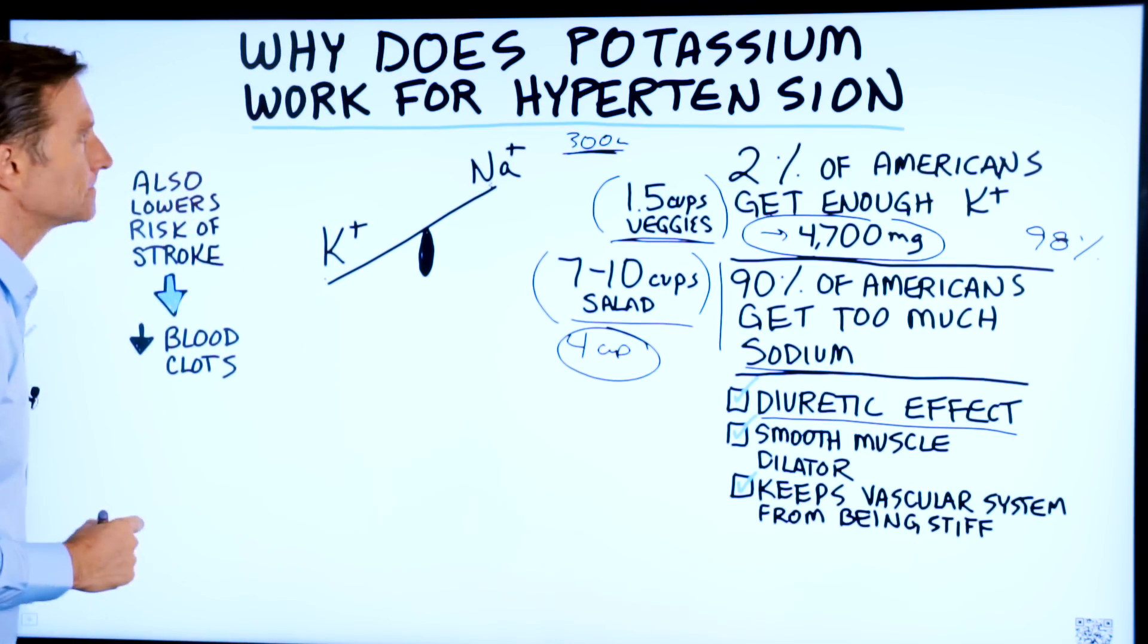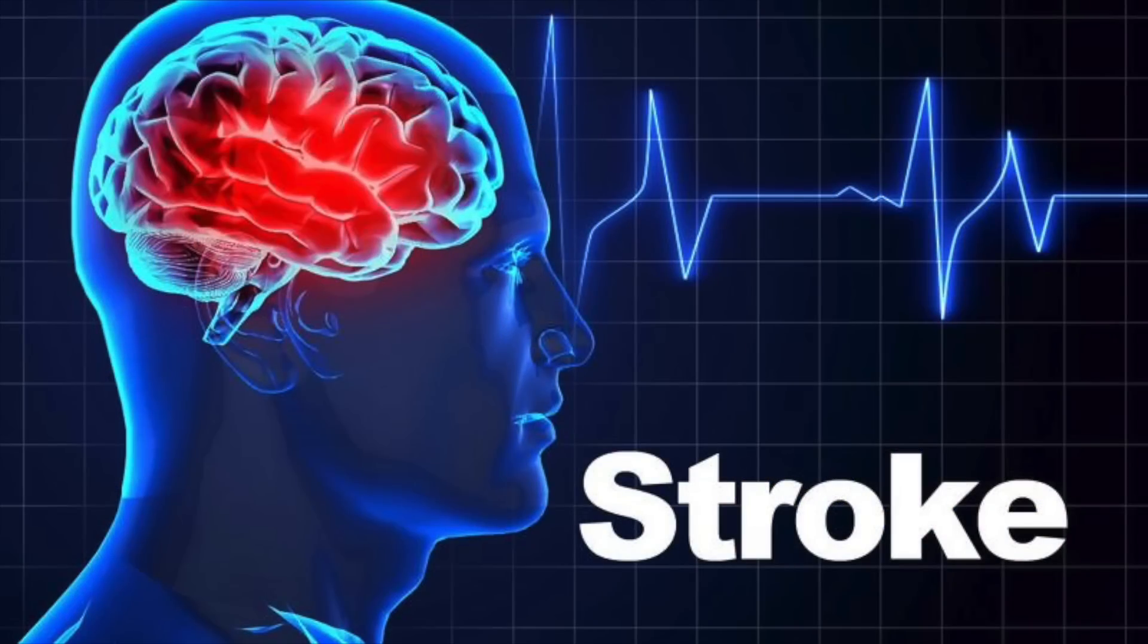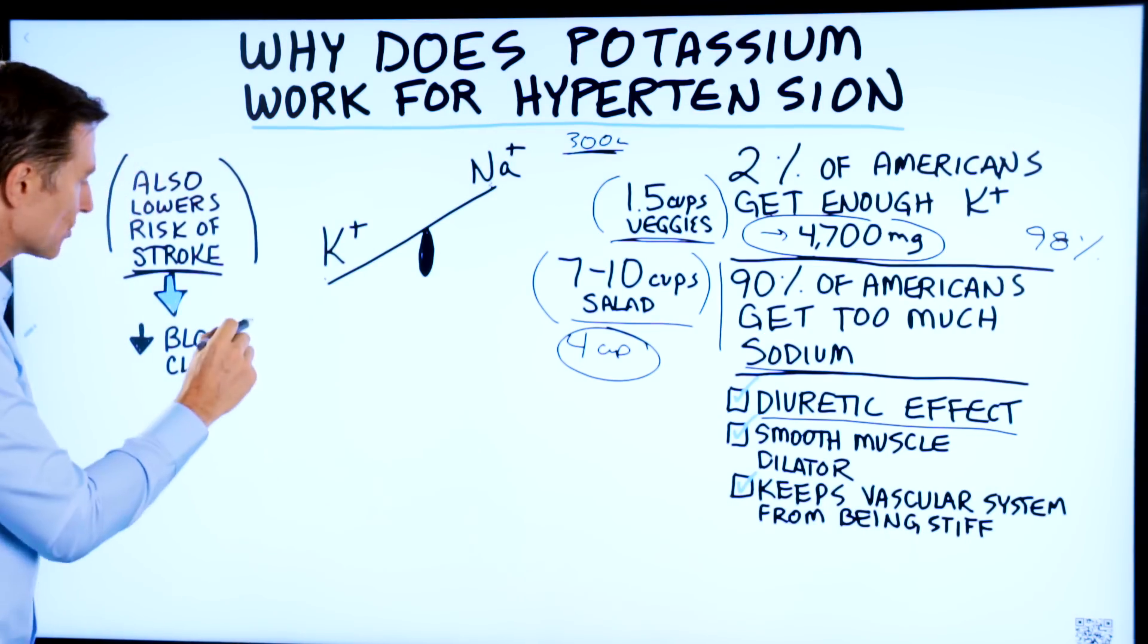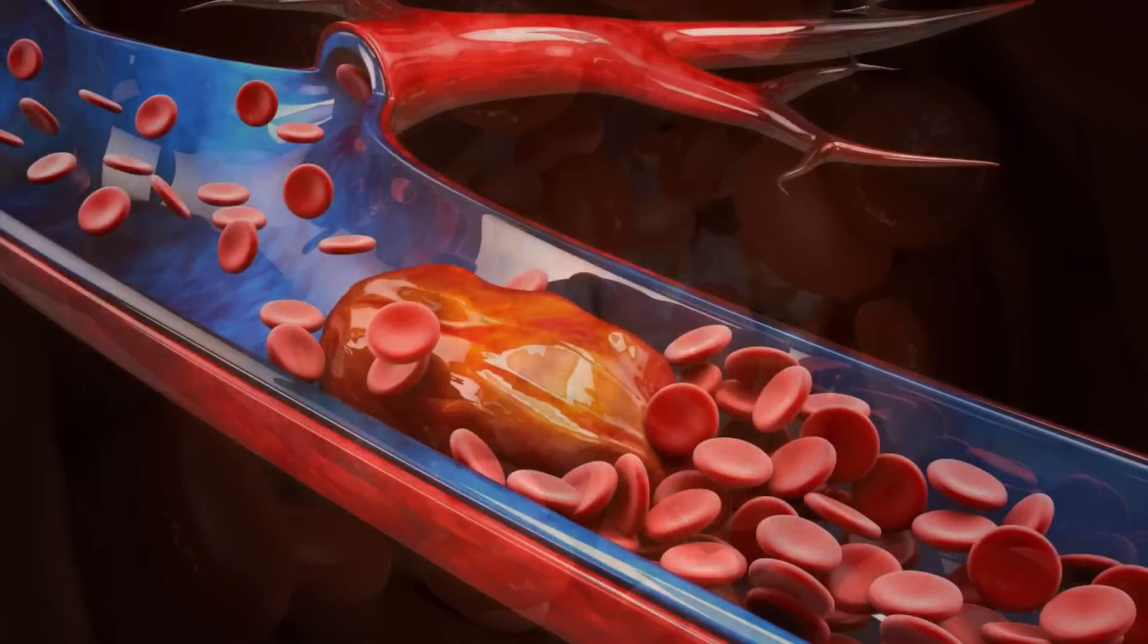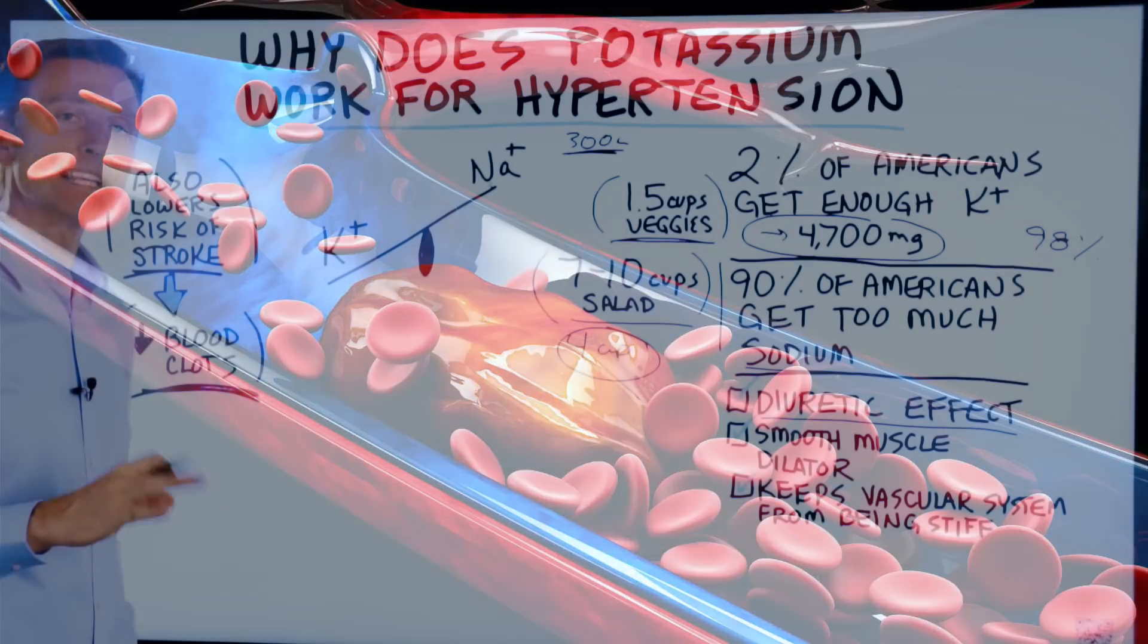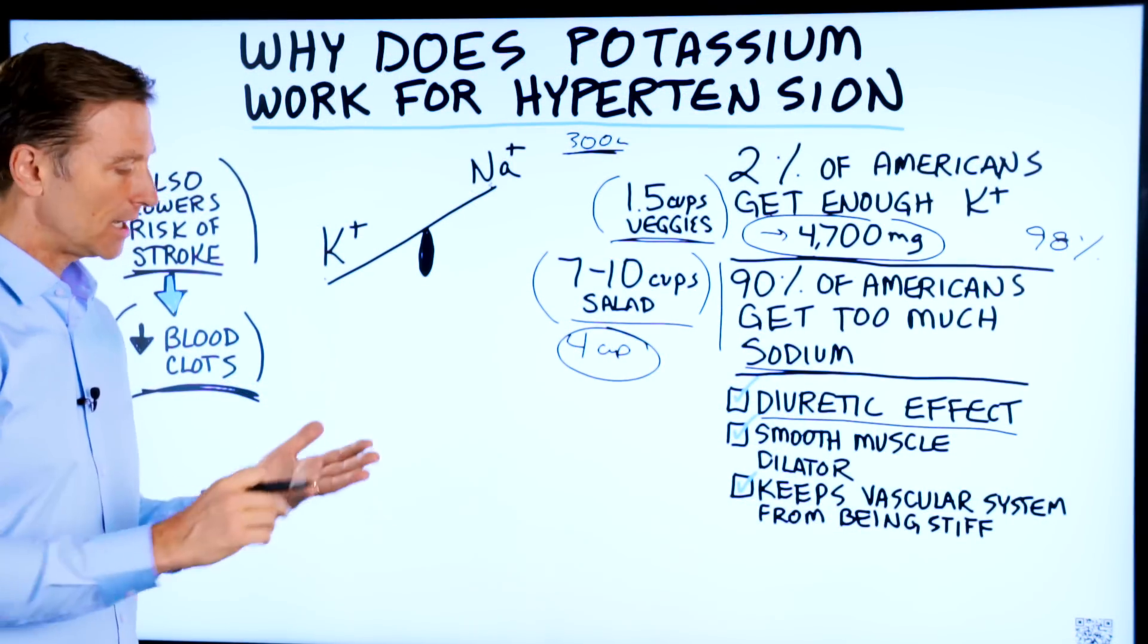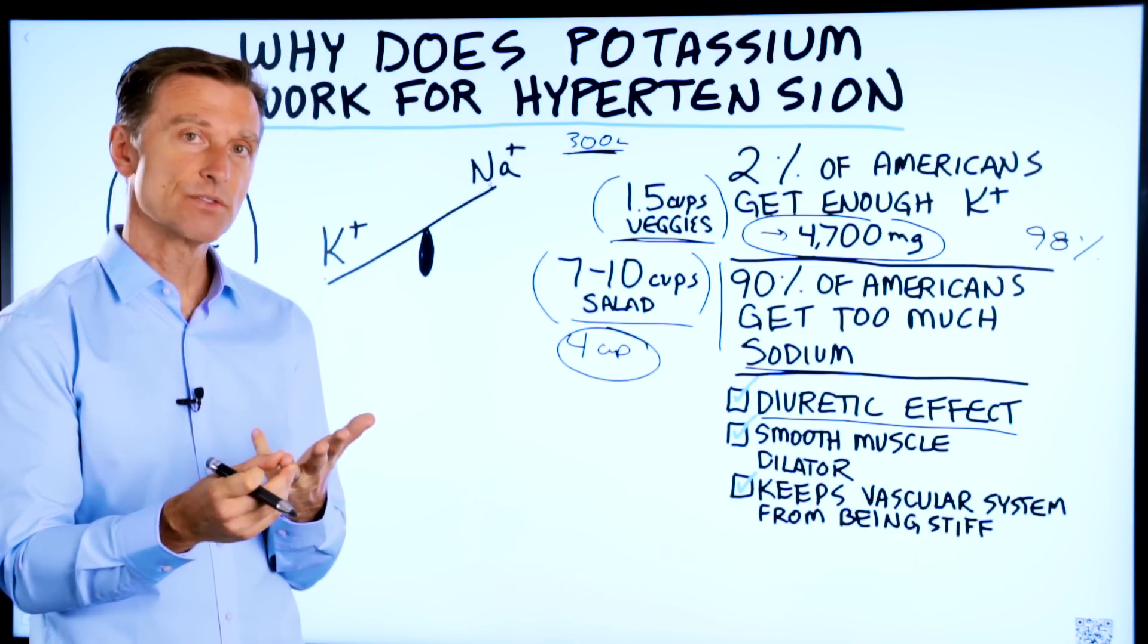The other thing I want to mention about potassium is it also lowers the risk of getting a stroke. And the way that that occurs is that potassium directly affects the consistency of blood. It reduces clotting, as in blood clots. Potassium can kill two birds with one stone. Of course, that's not the best analogy, but it can actually help reduce hypertension and decrease the risk for a stroke.